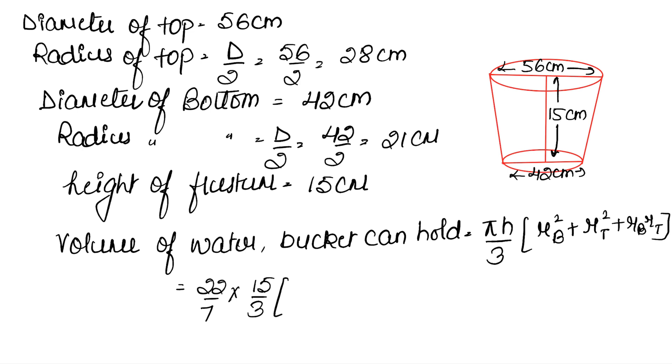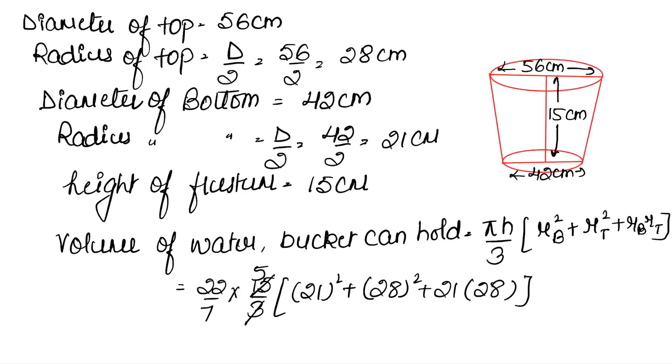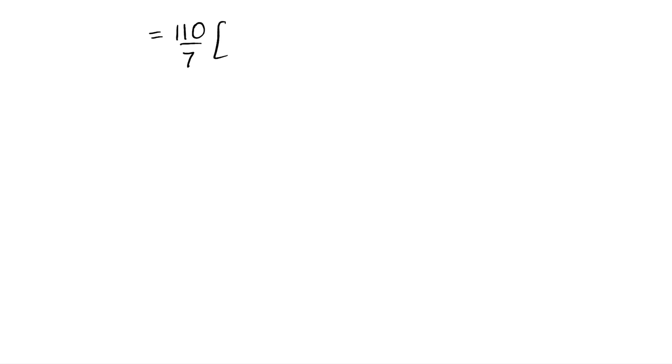Radius of bottom is 21, so 21 squared. Plus radius of top is 28, so 28 squared, plus 21 into 28. This equals 110/7. Now, 21 squared is 441.